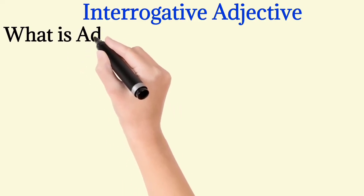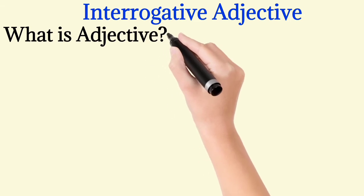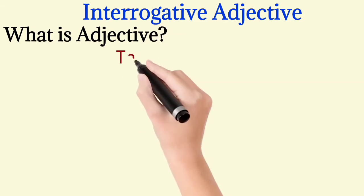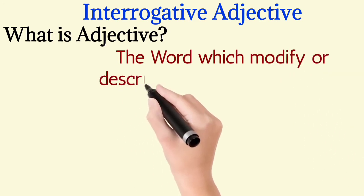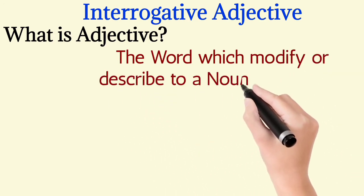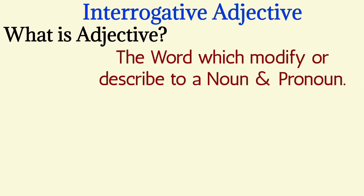First we discuss, in previous class we also discussed what is adjective. What is adjective? Adjective is a word which modify or describe a noun and pronoun. It is a modifier of a noun and pronoun.